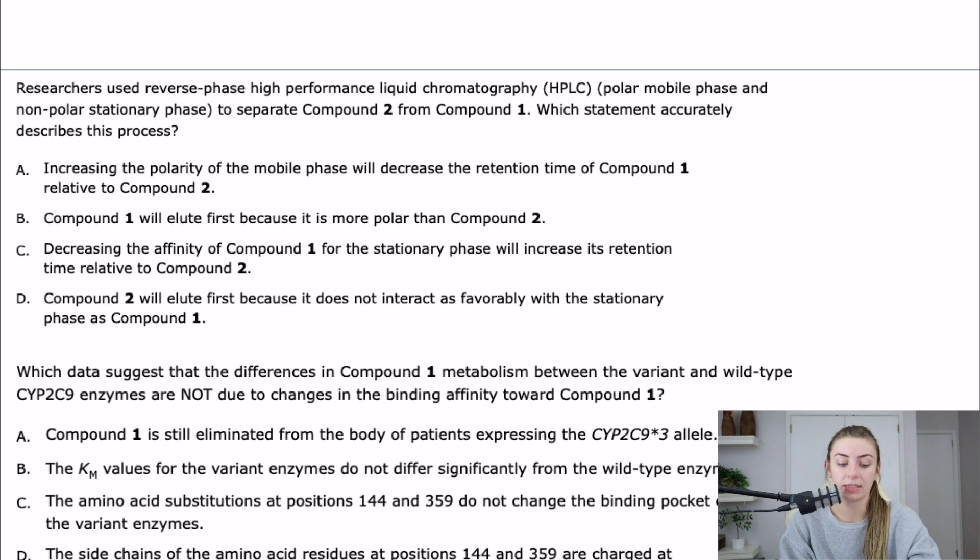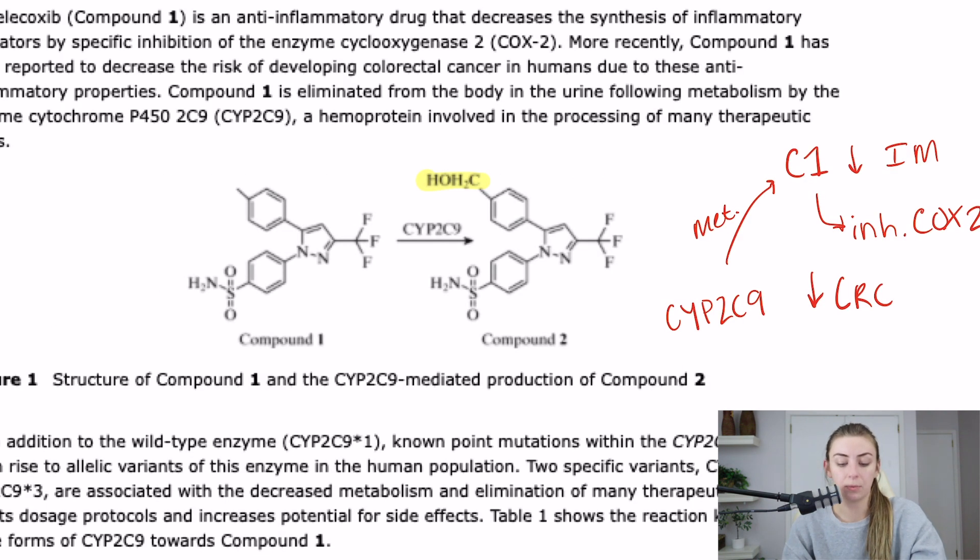Question 18 says researchers use reverse phase high performance liquid chromatography, polar mobile phase and non-polar stationary phase to separate compound two from compound one, which statement accurately describes this process. So if we simplify this question down, this is totally asking about basic science. It's asking about polarity and chromatography and how those two are going to relate with the information that we have in the passage because they gave us the molecules, what the molecules look like. So this question is basically asking which compound is more polar and therefore it's going to go with the mobile phase.